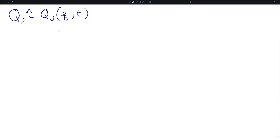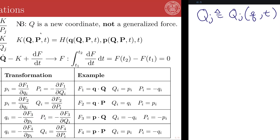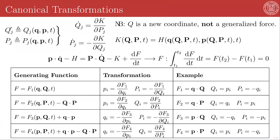What we're looking for is a point transformation of the phase space under which Hamilton's equations are invariant. We wish to define a new set of coordinates Q sub j that are functions of the generalized coordinates, their conjugate momenta, and time, and a set of new conjugate momenta, capital P, which are similarly a function of the full phase space and time of the original system.